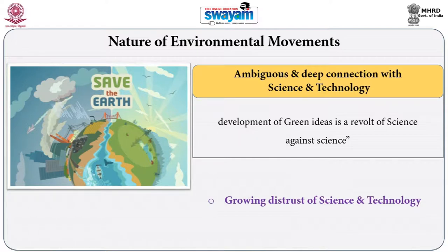Environmentalism is a departure from industrialism. Therefore, industrial technology, modern science and modern technology, becomes the fundamental adversary — the fundamental enemy — for these environmental movements.